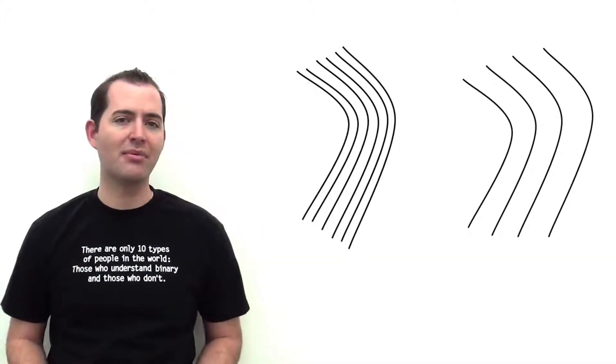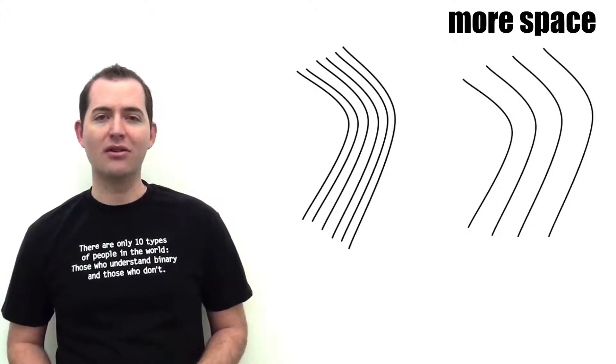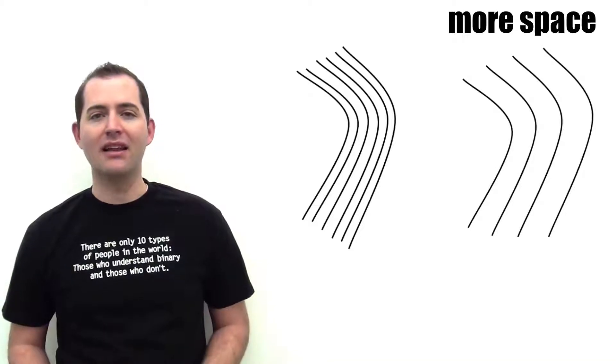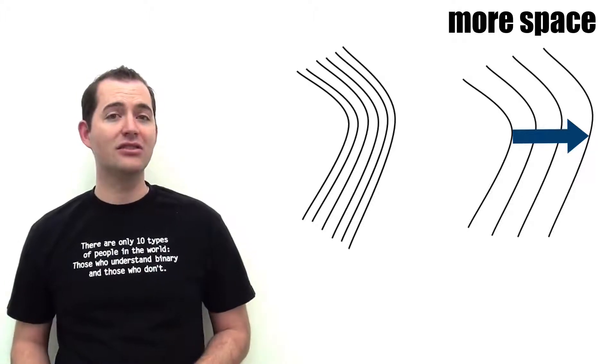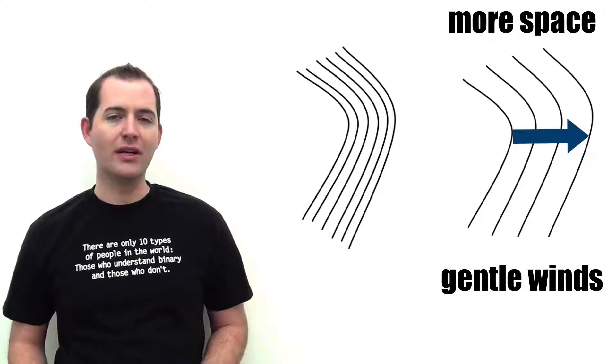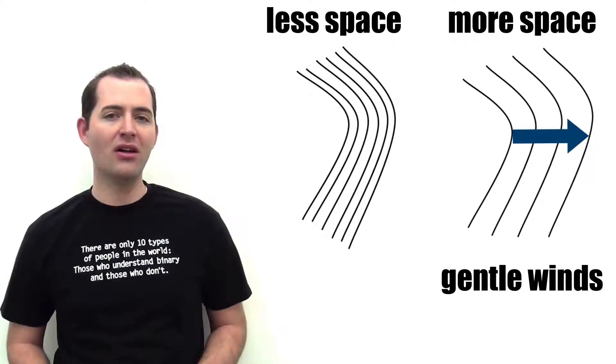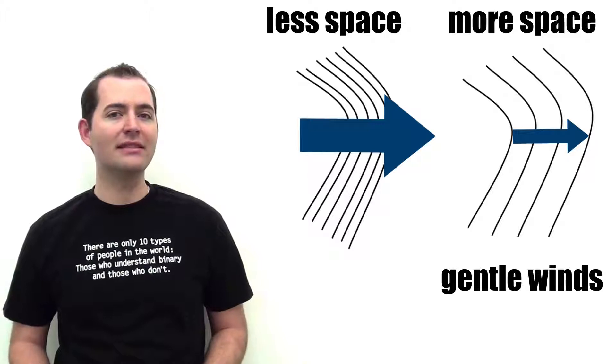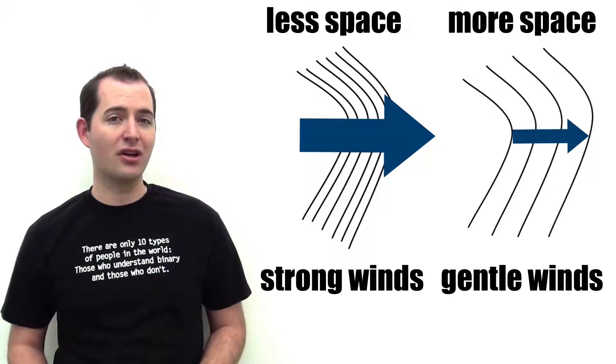The distances between isobars on a map represent different pressure gradients. When isobars are widely spaced, there is a smaller or more gradual pressure gradient, leading to gentler winds. The opposite is also true. When isobars are closely packed, there is a strong or steep pressure gradient and winds are typically much stronger.